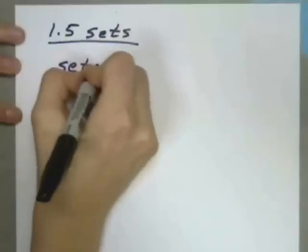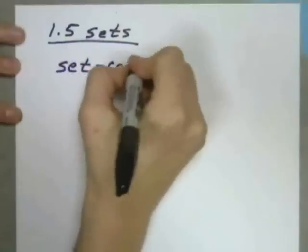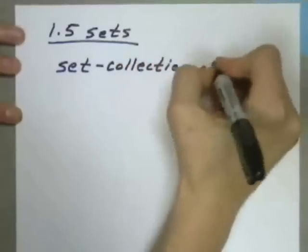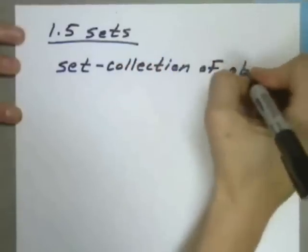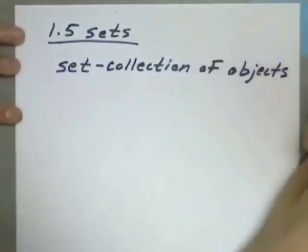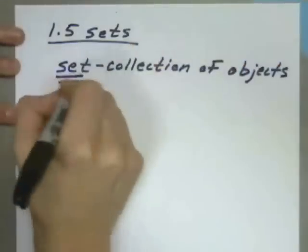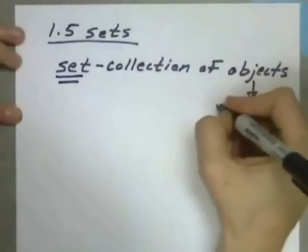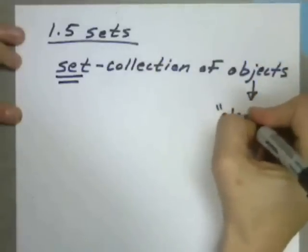So a set, by definition, is a collection of objects. For us, usually those objects will be numbers. And in math, when you refer to objects, another word for it would be the word elements.